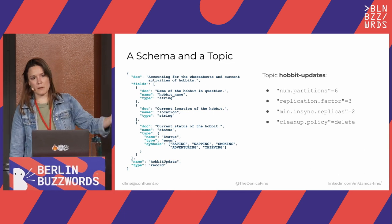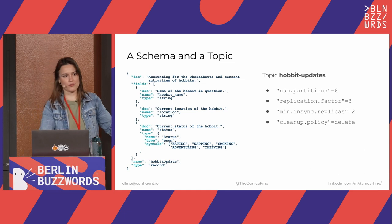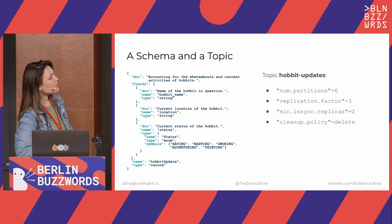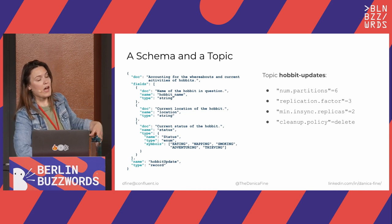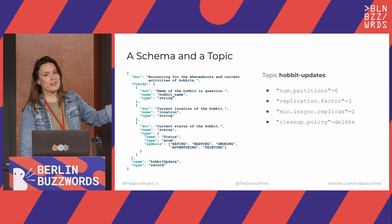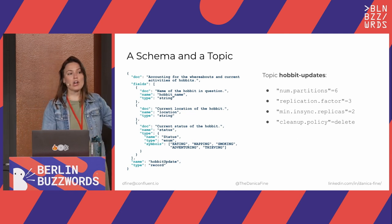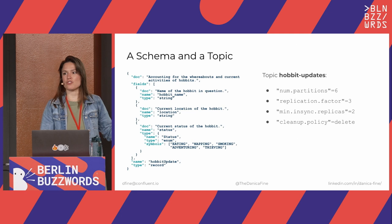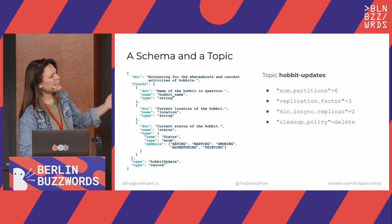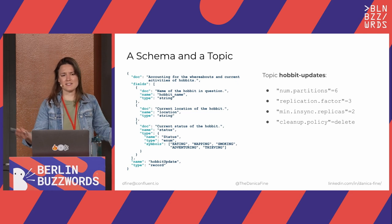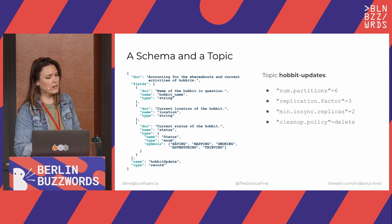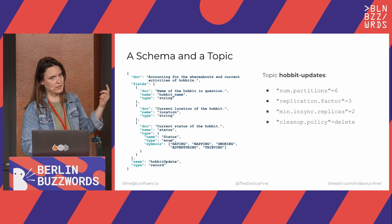So we have the number of partitions. Kafka is a distributed system, so we want to store the data on different areas of the cluster, so we break it up into partitions. We have replication factor — how many copies of each of those partitions we should have. Min-insync replicas relates to that as well, so when we are copying this data, how many of those copies should be up to date for us to consider the cluster healthy. And then cleanup policy — so when data is stale, how do we get rid of it?